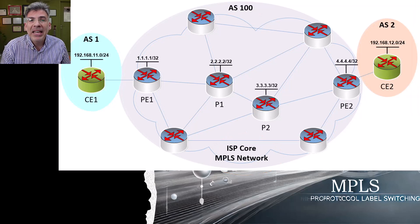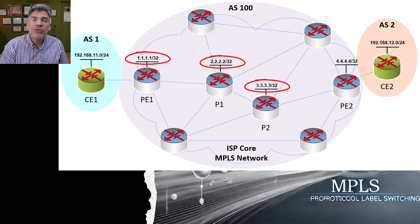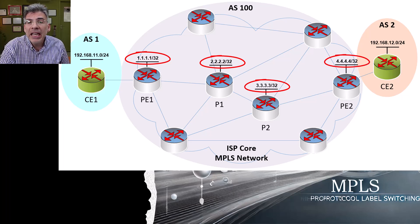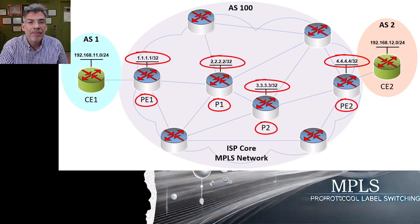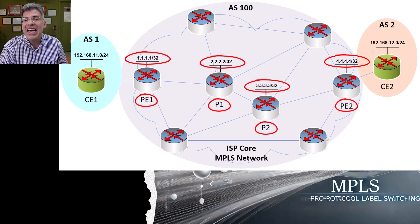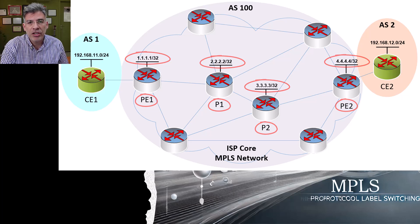All routers in the MPLS ISP network will have a loopback interface and an IP address configured on those interfaces. For now, I've only labeled the PE and P routers that we will be dealing with along the expected MPLS path, but this is done for all PE and P routers in the ISP MPLS network. We'll see how those loopbacks are going to be used in our configuration.